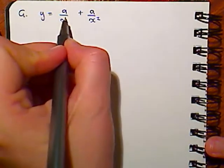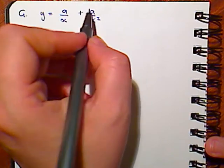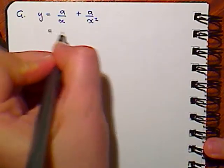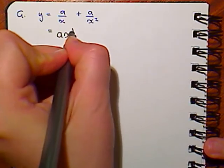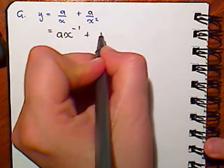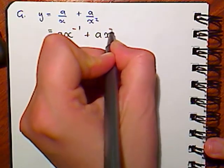This next question we need to turn both of these individual components into index form. So I'm going to rewrite this question as ax to the minus 1, this is this component here, plus ax to the minus 2.